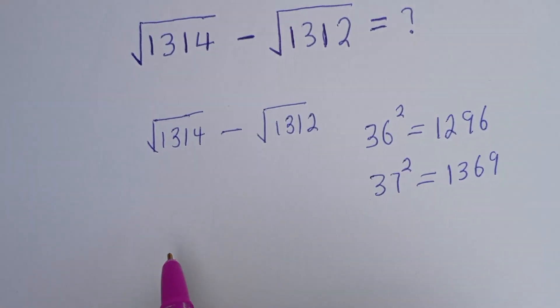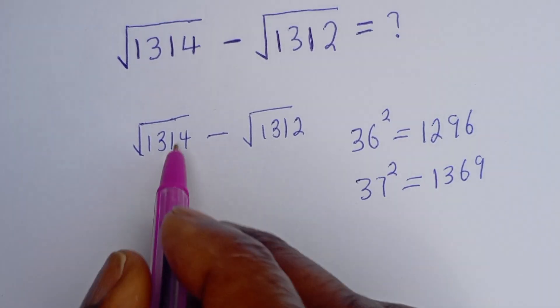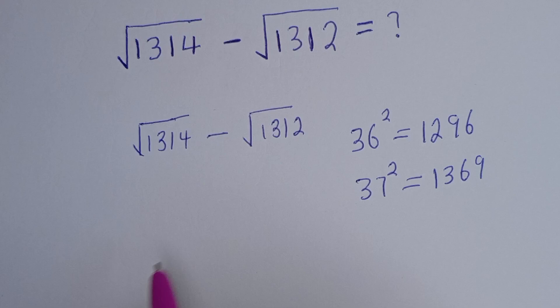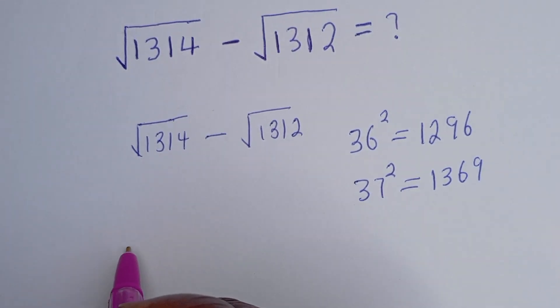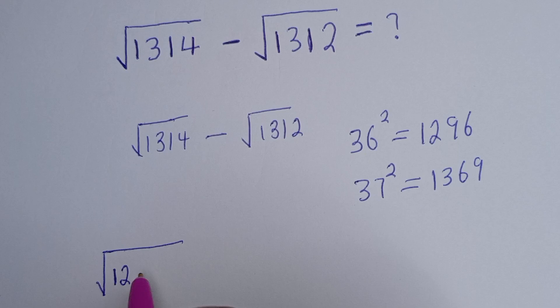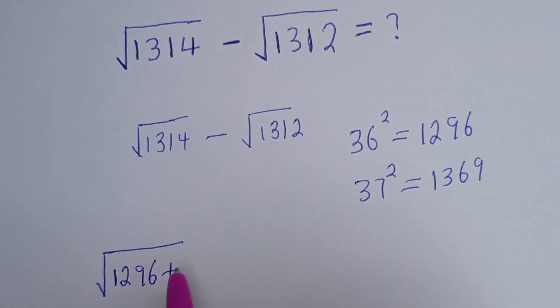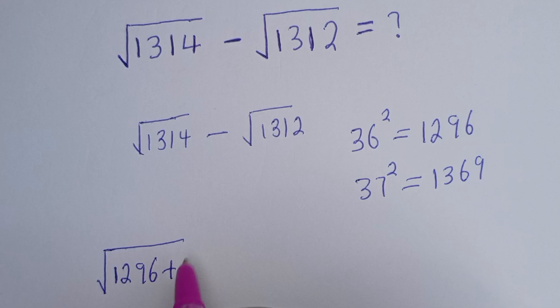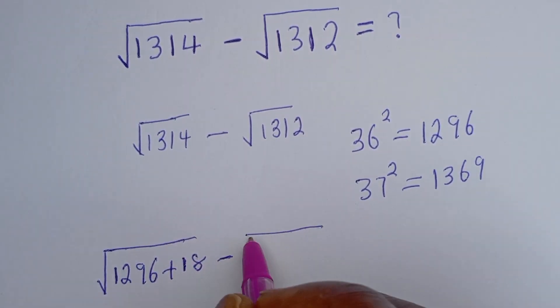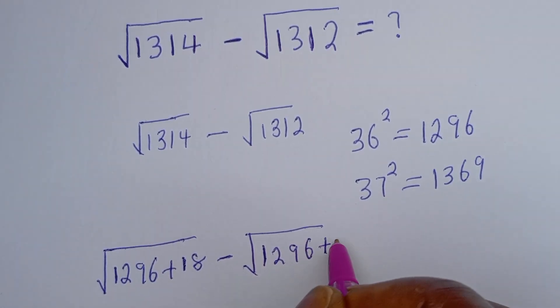Then square root of 1314 can be written as square root of 1296 plus 18, then minus square root of 1296 plus 16.